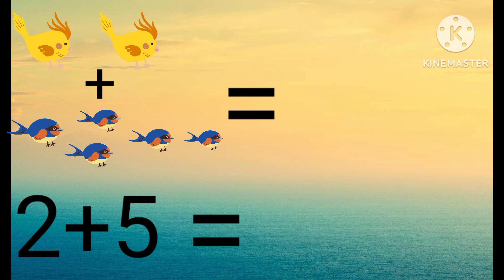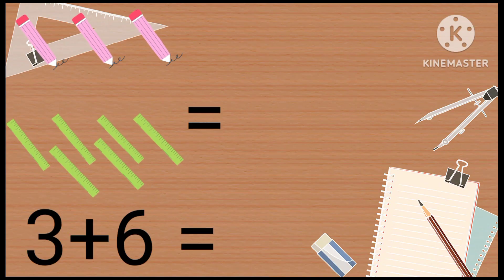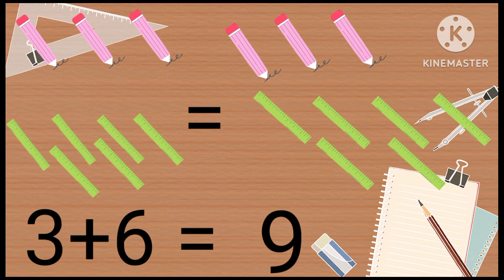If we have two yellow birds and five blue birds, the total is seven. Very good! Now take one more example: there are three pencils and six scales. The total is nine. Amazing!